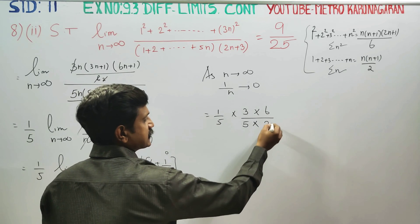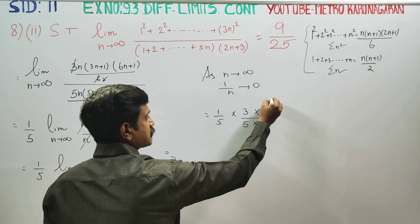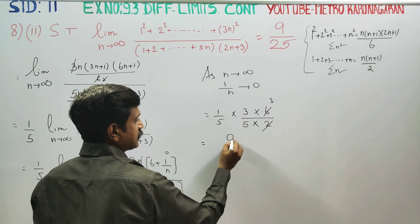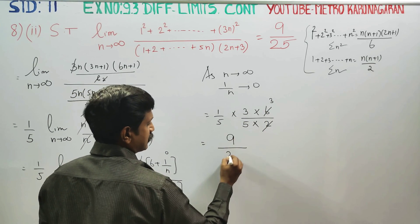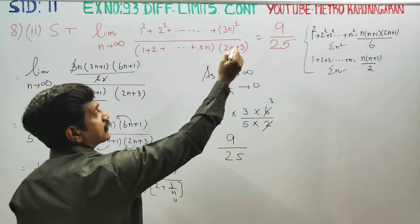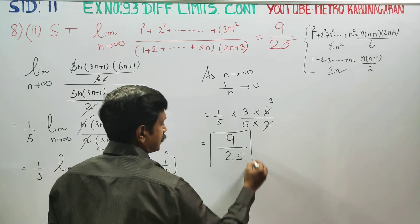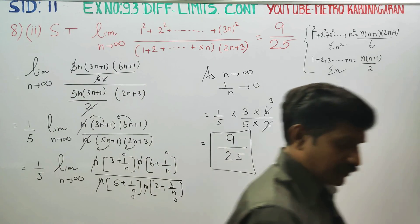You can cancel: 2 cancels, 3 times 3 is 9, 5 times 5 is 25. So 9 by 25 is your required result. Thank you.